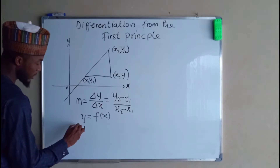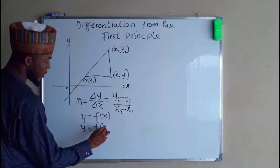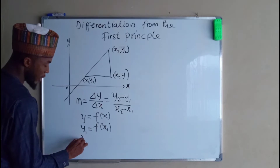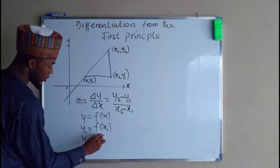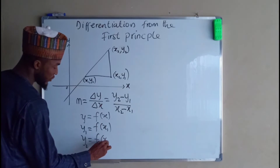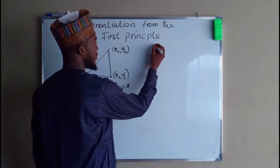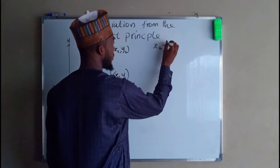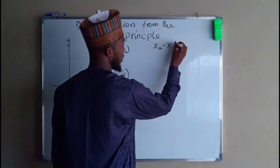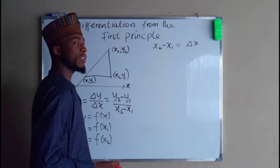this y1 is a function of f of x1, while y2 is another function of x2. But you know that x2 minus x1 is the change along the x axis.